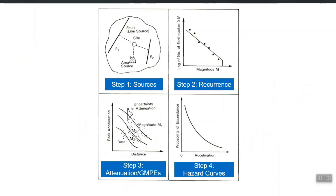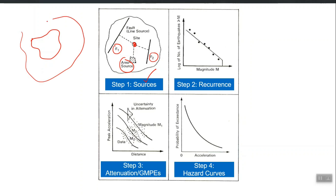This is the pictorial summary of all four steps. First are sources — some can be area sources, some can be fault sources which are close to your site. If you are doing it for one particular site, you can identify sources like this. If you want to do it for a whole study area, you take a buffer zone — if this is my study area, I will make a buffer zone, and in this whole region, any faults or area sources that can govern the seismicity in my study area, I will consider all of them.